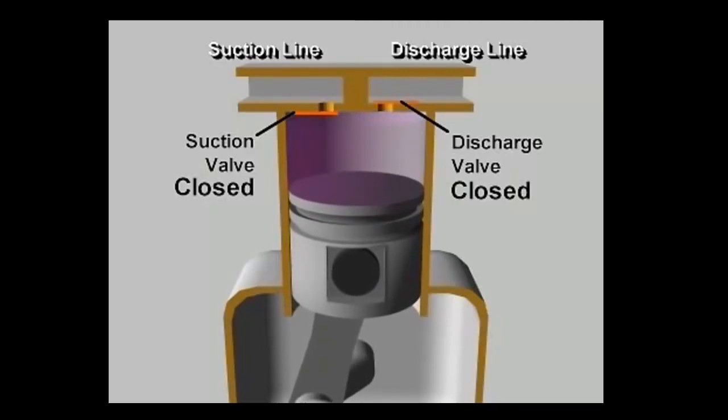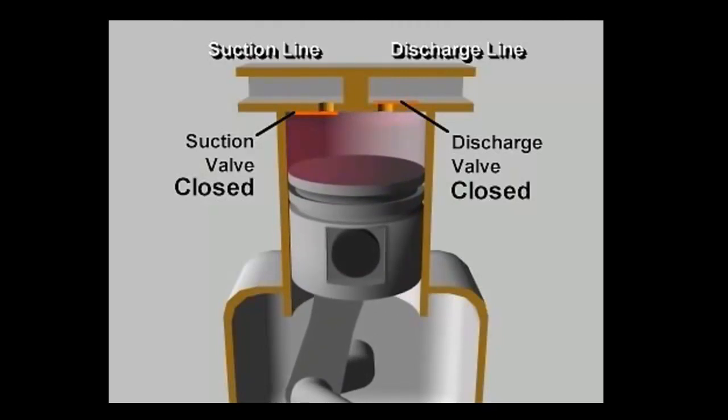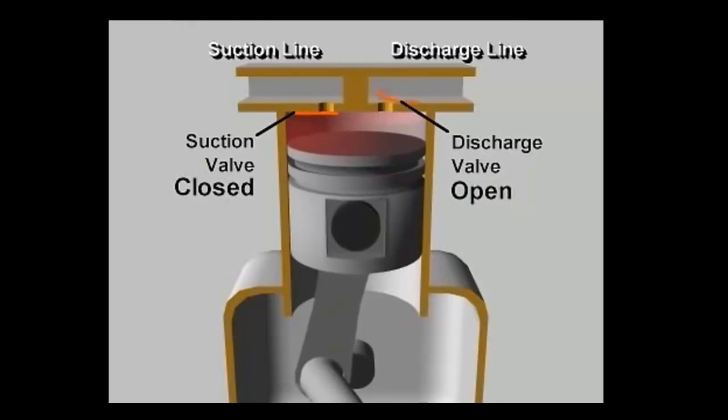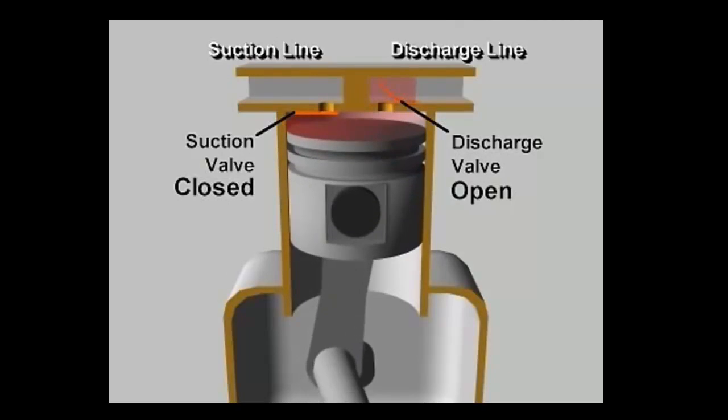As the piston moves up, it reduces the volume of the space in the cylinder, increasing the pressure of the vapor. When the pressure in the cylinder exceeds the high side pressure in the discharge line, the pressure difference pushes the discharge valve open, letting the compressed vapor flow out of the cylinder.